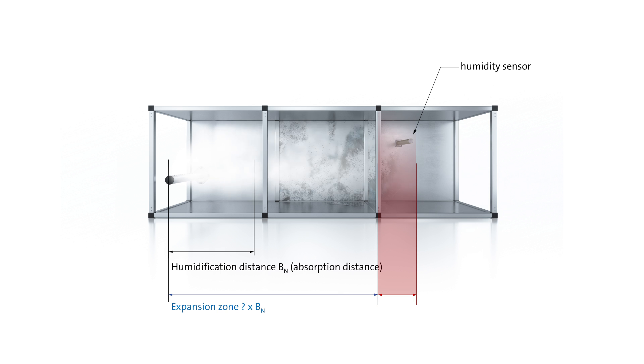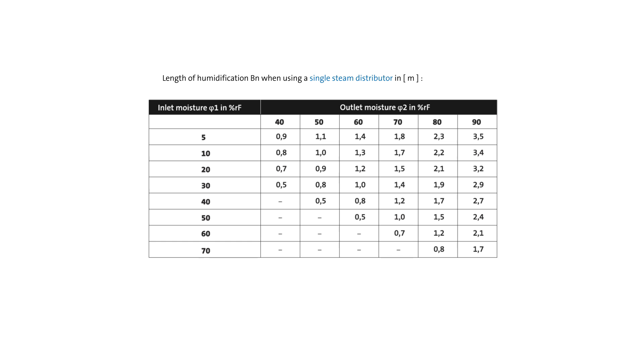A sensor installed in the expansion zone will not measure exact values and then become useless for control purposes. How can the humidification distance be determined? The humidification distance table makes determining the humidification distance BN quite simple.